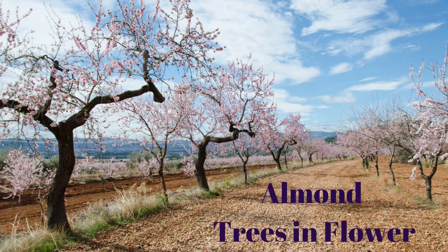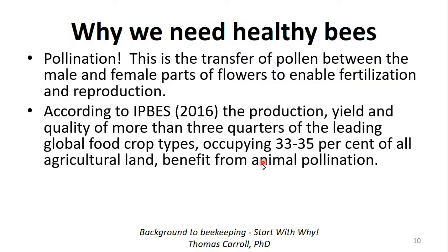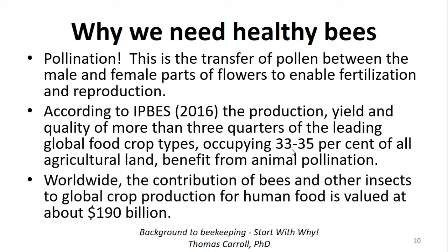According to a major report, the production, yield, and quality of more than three-quarters of the world's leading global food crops — occupying 33 to 35 percent of all agricultural land — benefit from animal pollination, with bees being the most important contributors. Worldwide, the contribution of bees and other insects to global crop production for human food is valued at 190 billion dollars, according to the IPBES 2016 report, which will be linked for free download.